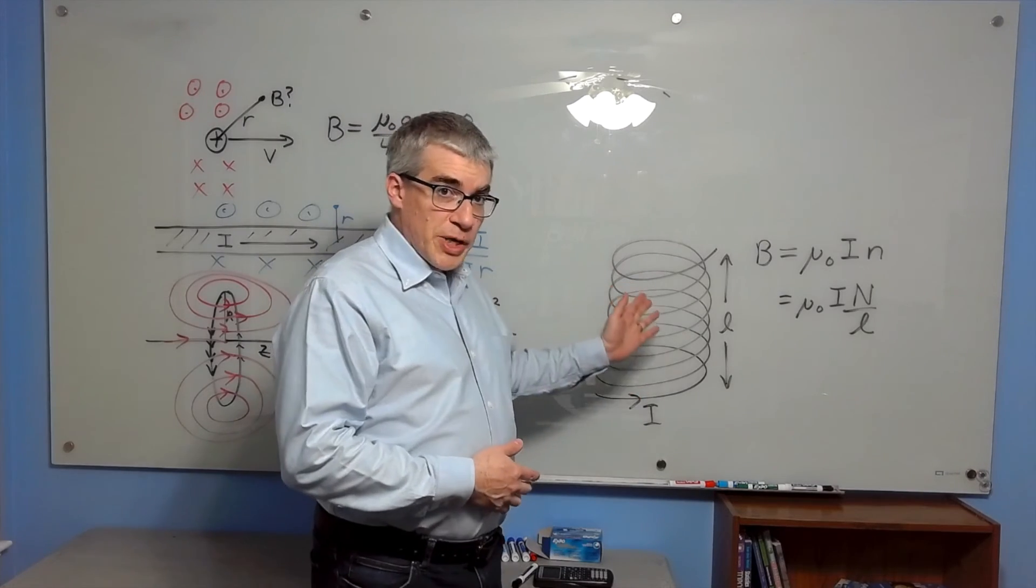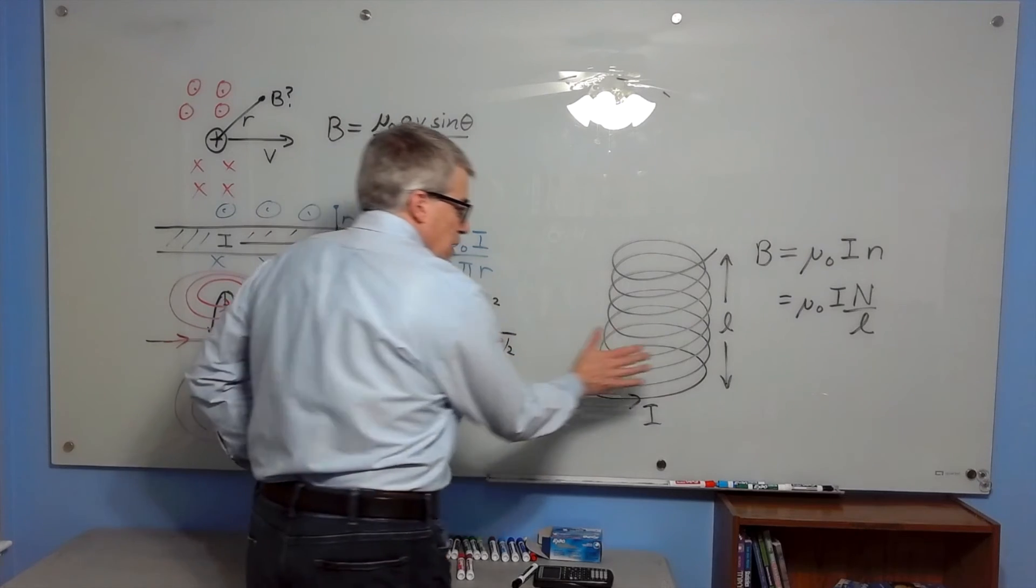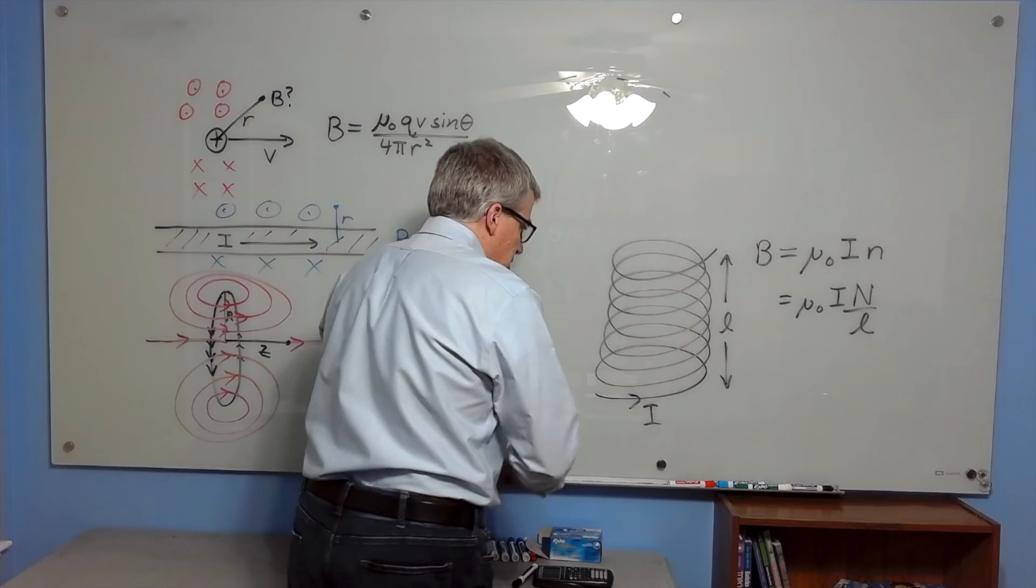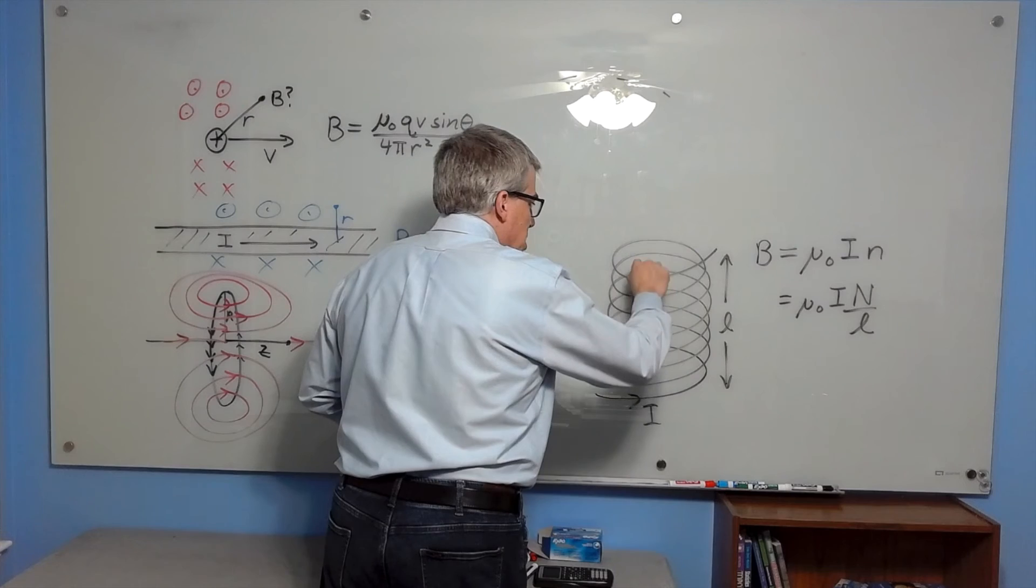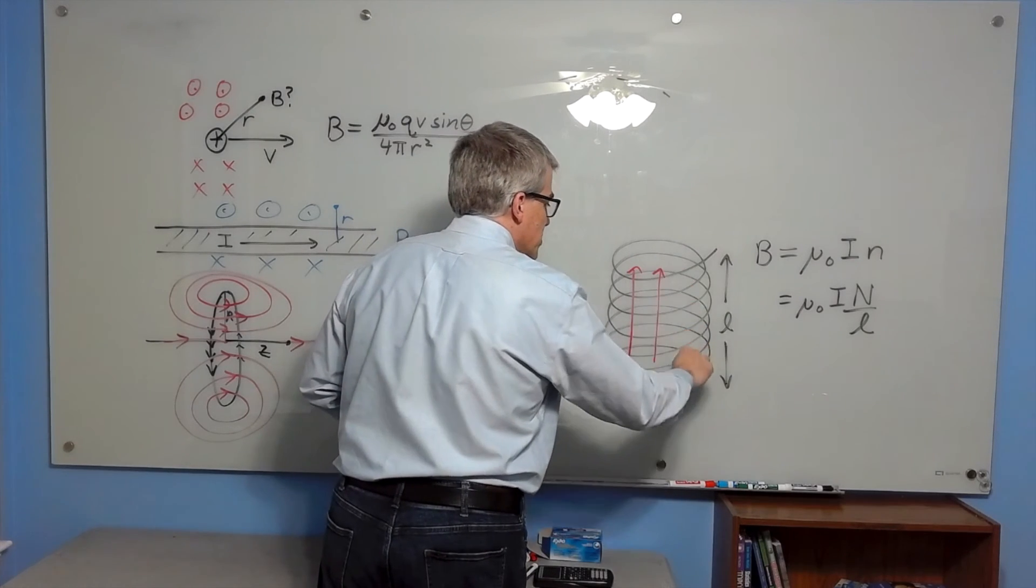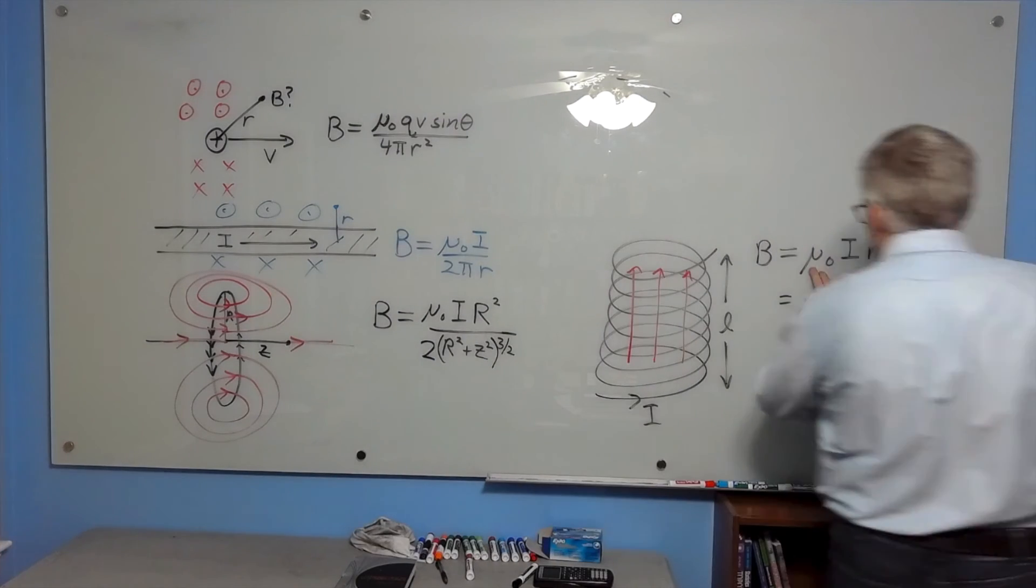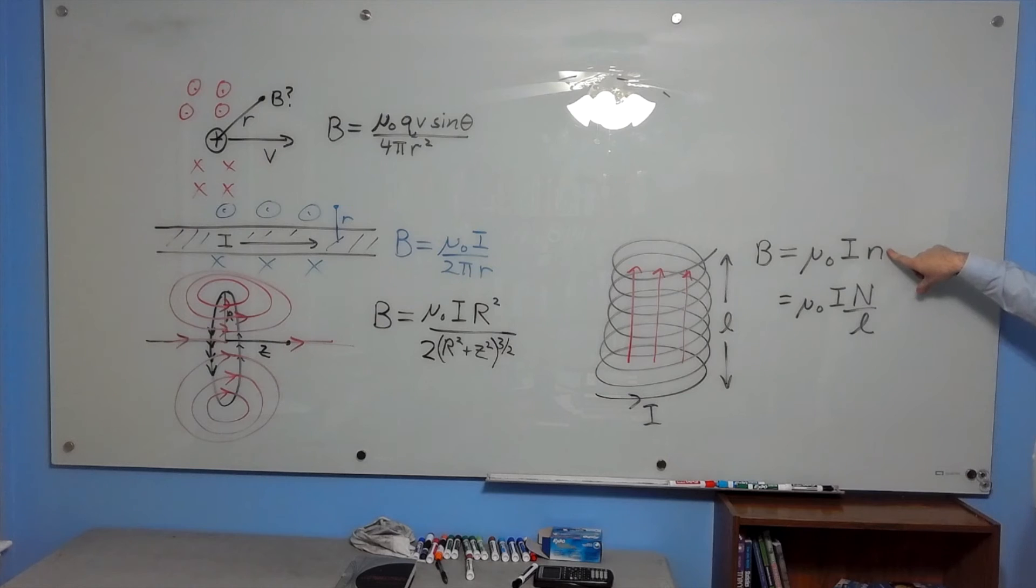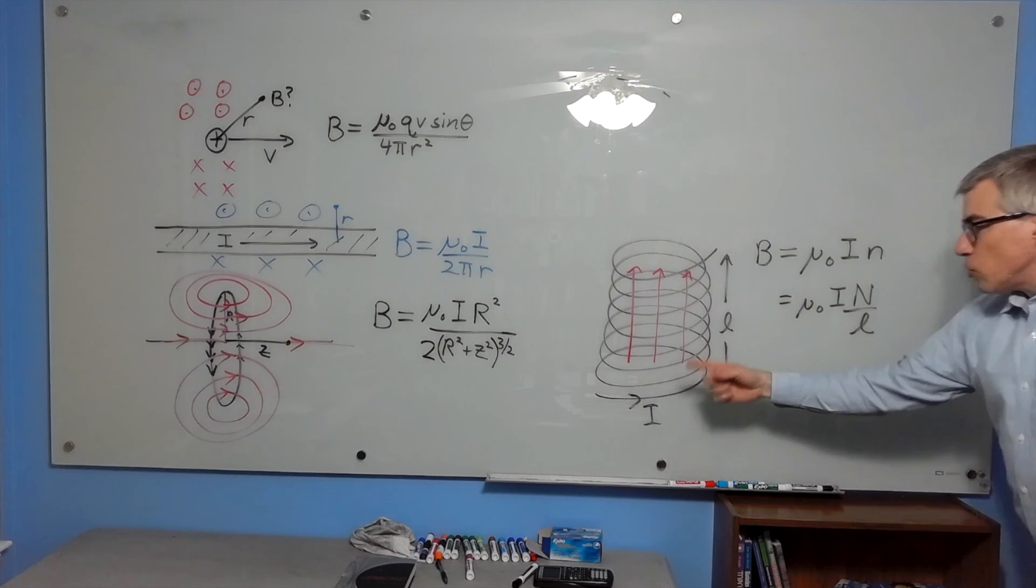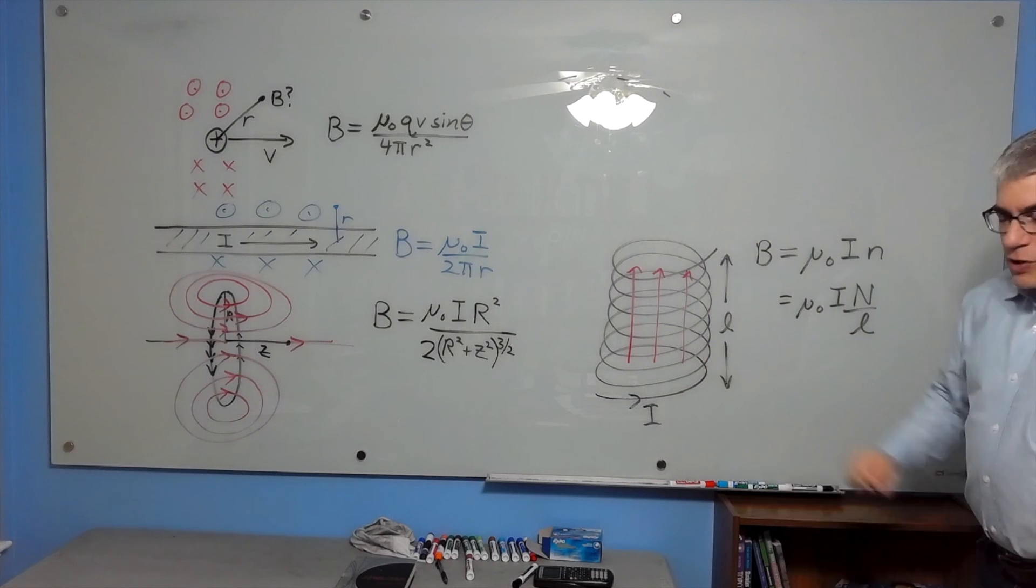Now for a solenoid, basically a coil of wire forming a cylinder. Right-hand rule as usual, so the magnetic field would run straight up, but here's the trick. A solenoid makes a uniform magnetic field. There's no r in the formula. It's simply mu naught times current times the turns per unit length, or more explicitly, the total number of loops divided by the length this way of the coil.